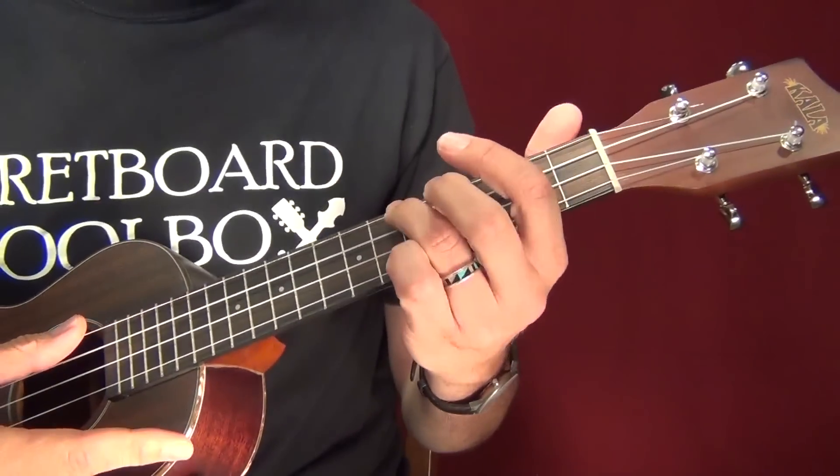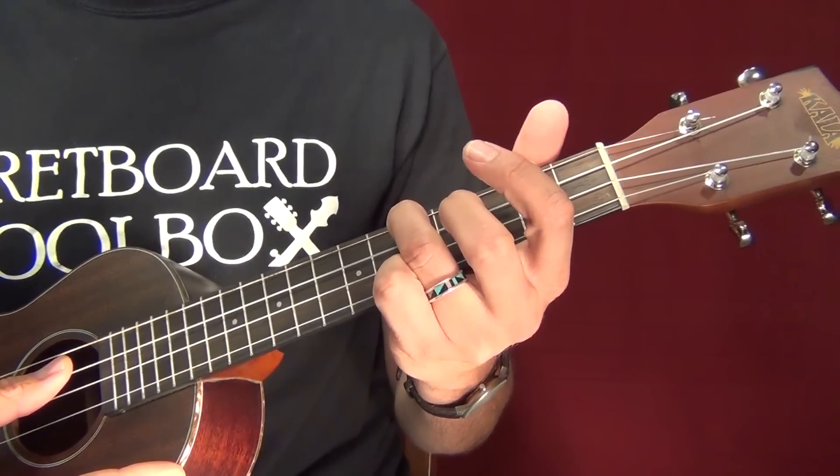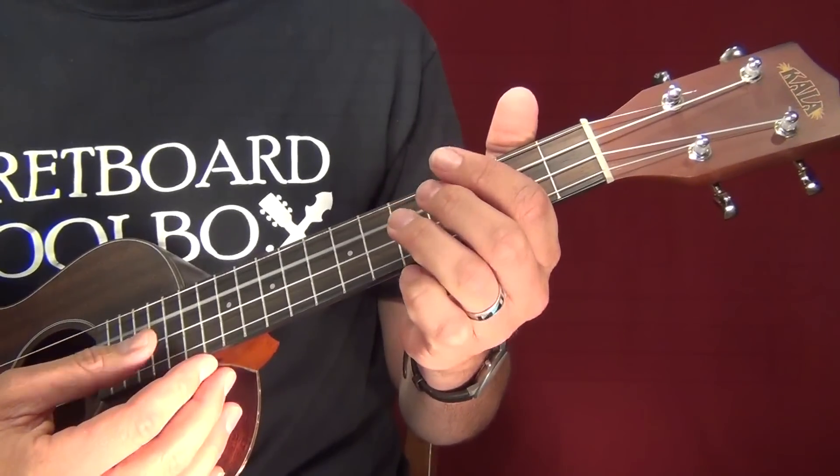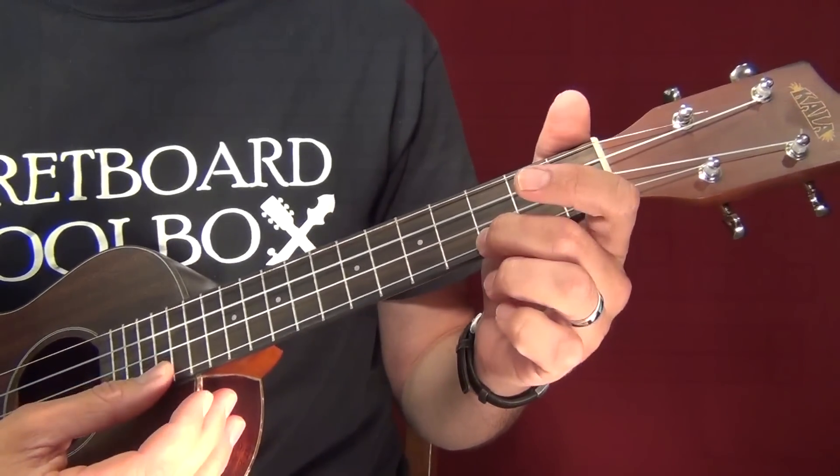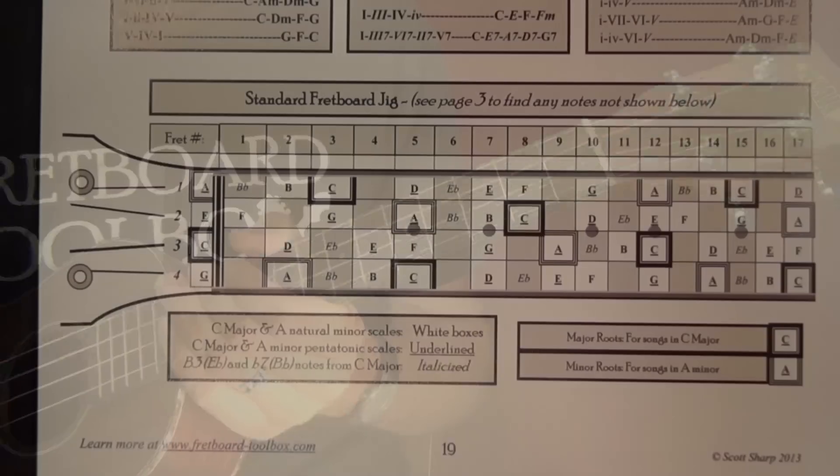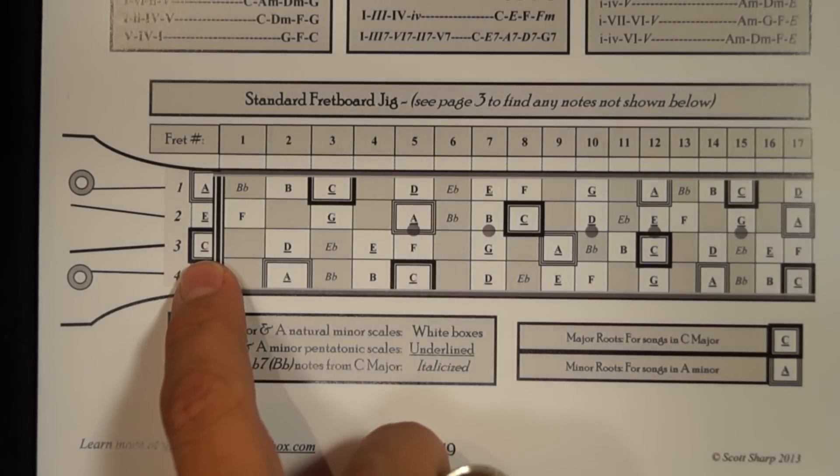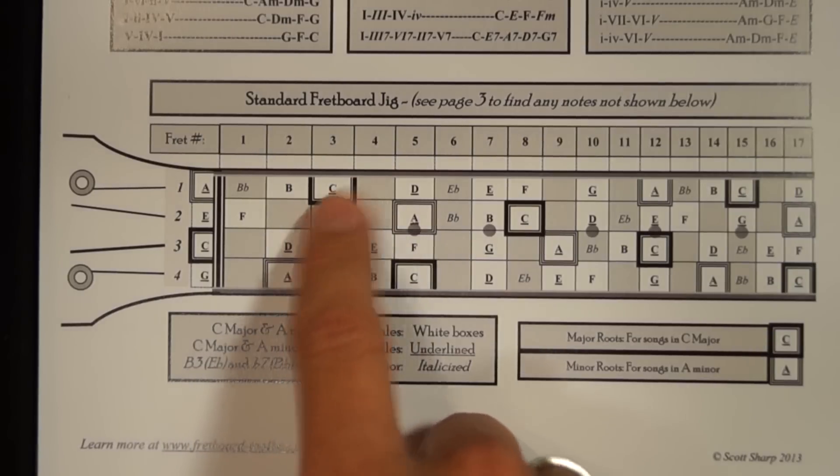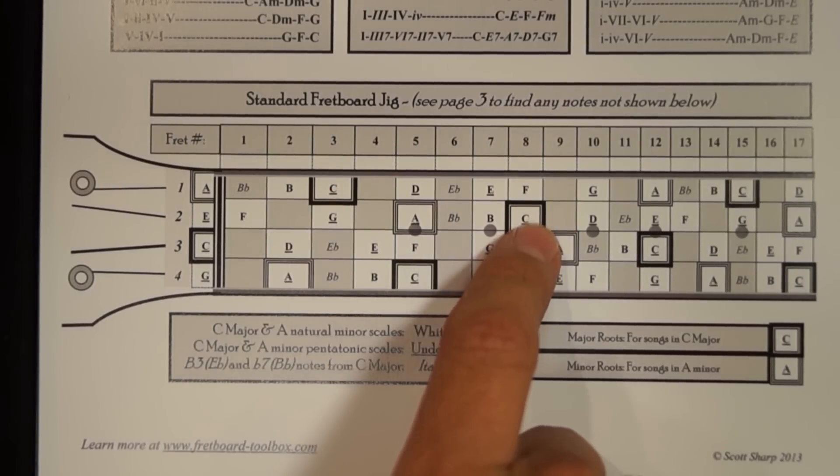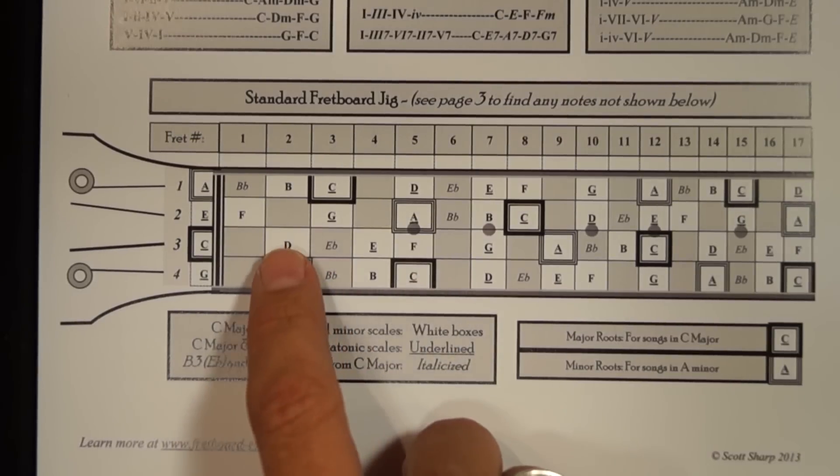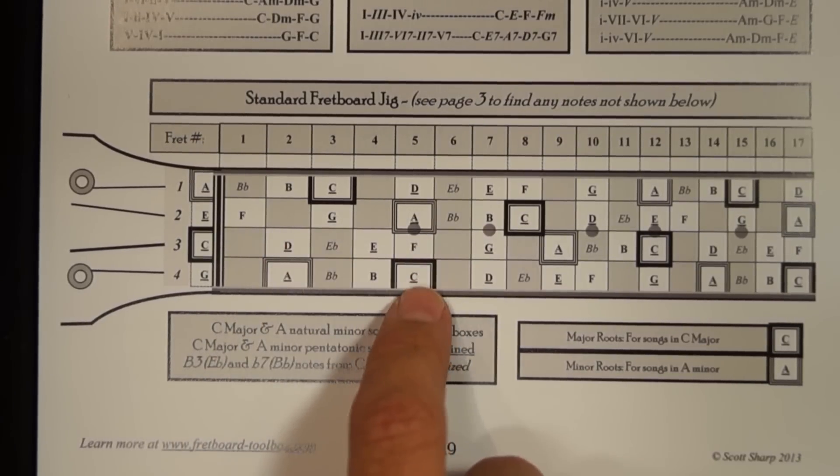The special C box is because I want to be able to find that C note all up and down the fretboard. So if I look on the fourth string fifth fret, there's a C. If I look on the third string open, there's a C. If I look on the first string, third fret, there's a C. And so I can look here and see there's a C here, a C here, a C here, second string, eighth fret. So I can find C's all over the place. And then if I want to go from one C to the next, I can see what are my major scale notes here.